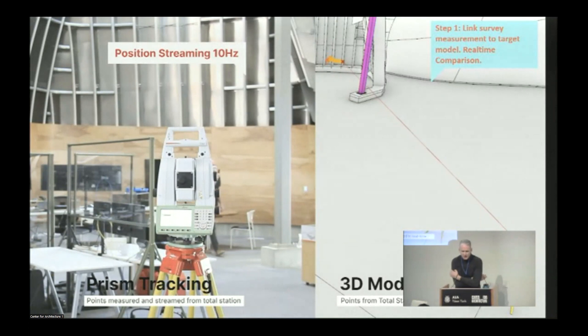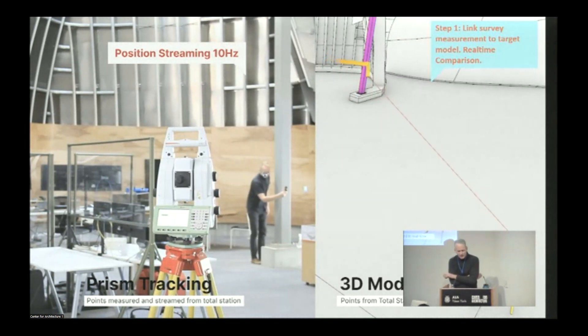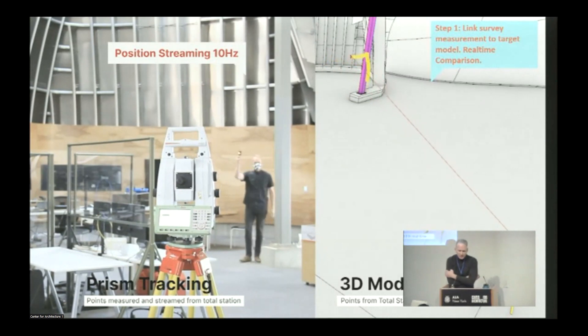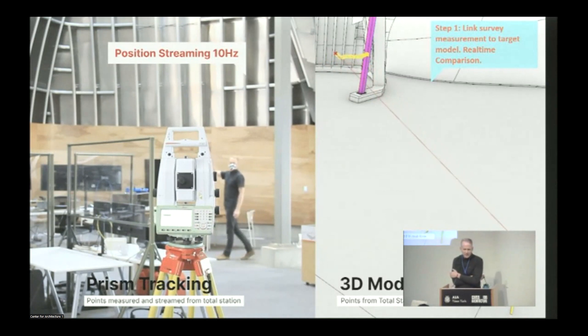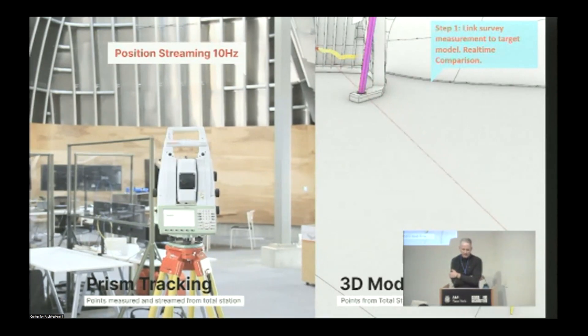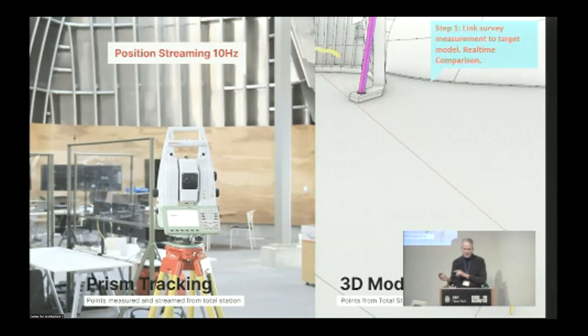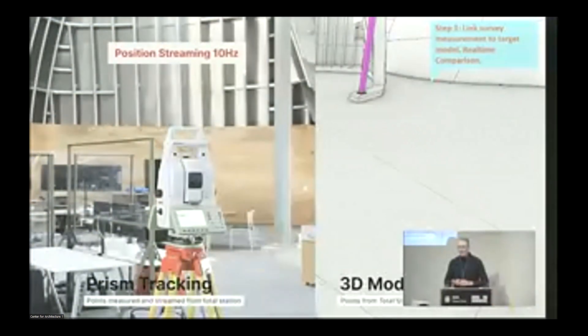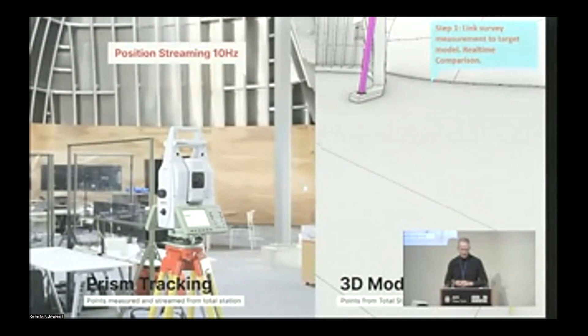There were two things we had to do to make that work. One was getting the information from the total station or from the site or whatever your sensor is back to the model faster. We're using a total station here, and we're broadcasting the survey data to the model directly. Once we had that sort of information directly in the model, we could do that thing that I was doing on the Google project in real time.